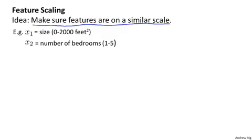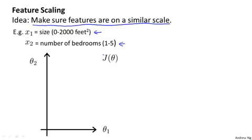Concretely, let's say you have a problem with two features, where x1 is the size of house and takes on values between 0 to 2,000, and x2 is the number of bedrooms and maybe that takes on values between 1 and 5. If you plot the contours of the cost function J of theta, then the contours may look like this, where J of theta is a function of parameters theta 0, theta 1, and theta 2. I'm going to ignore theta 0, so let's forget about theta 0 and pretend it's a function of only theta 1 and theta 2.